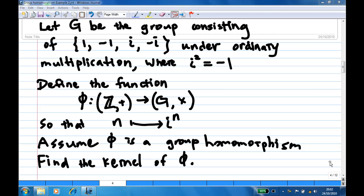Hi, for this recording we have a group G consisting of {1, -1, i, -i} under ordinary multiplication, where i² = -1.